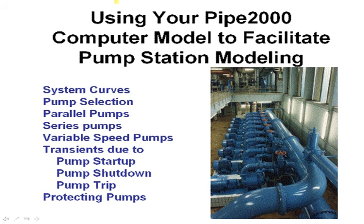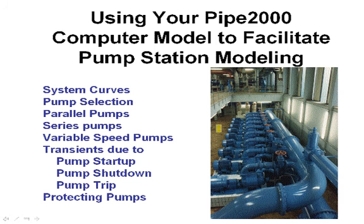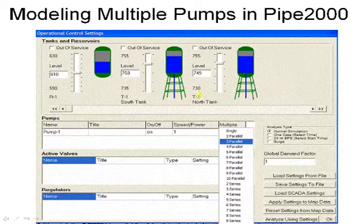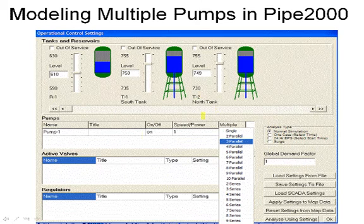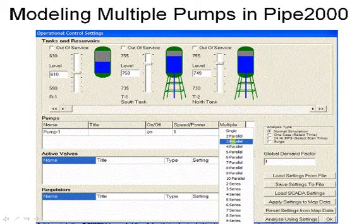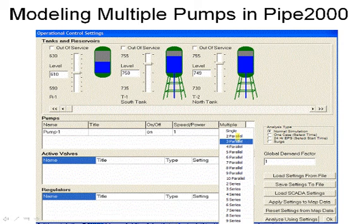Another feature in PIPE 2000 is handling multiple pumps at pump stations. We can very quickly model a pump station — this pump station has about nine pumps in parallel. We can go into our screen to launch the analysis and select, for example, three parallel pumps. By doing that, we can quickly run an analysis without modifying the model at all, showing what would happen if you had three parallel pumps.